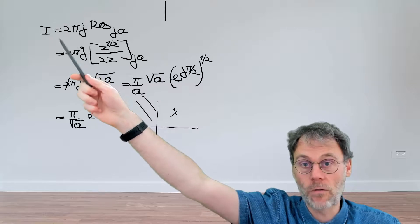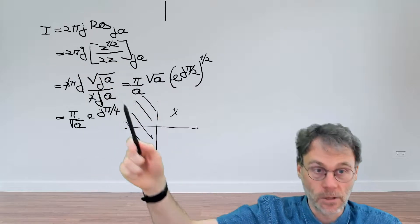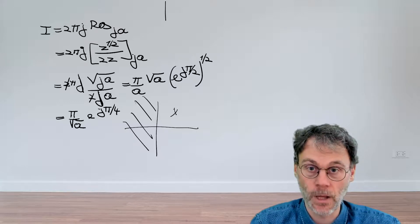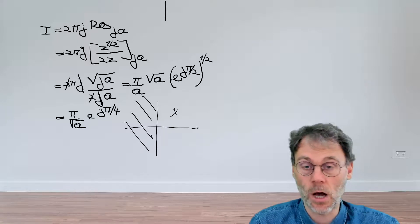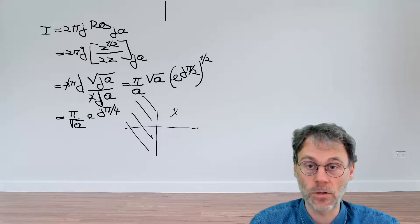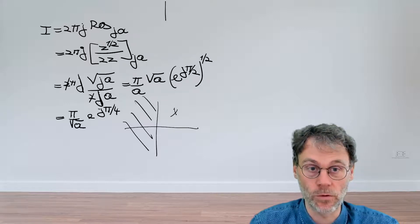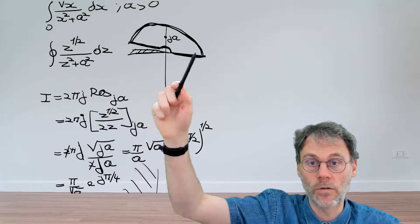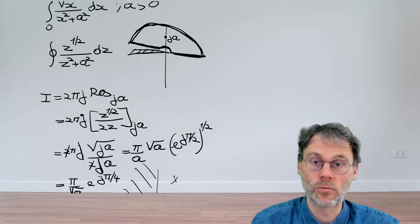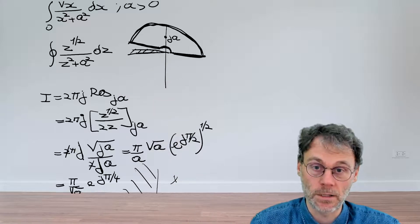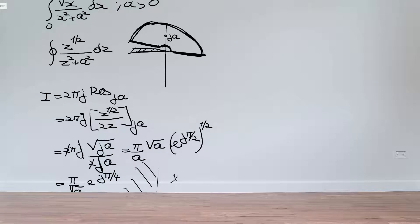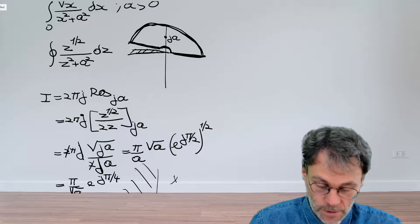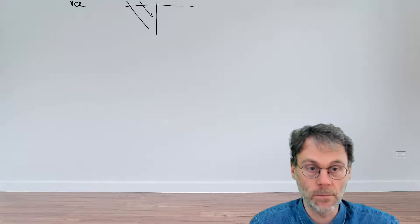We've calculated the value of our contour integral through residue calculus. The next step is figuring out what the different contributions to the contour are, and how we can isolate the real-valued integral we're interested in. Let's first look at the big semicircle and consider its contribution.